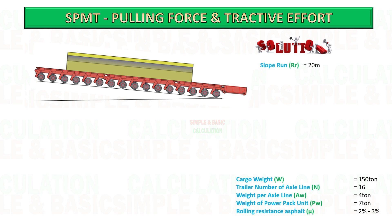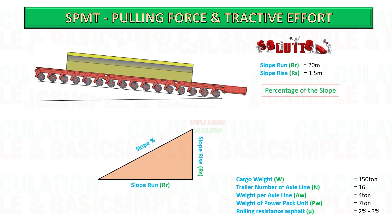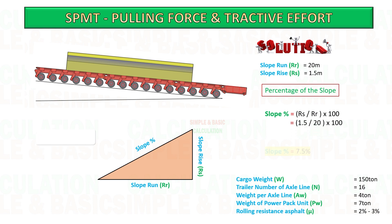In case you are transporting the cargo on an inclined road, we need to consider the road gradient, because it will increase the effort required for the drive axle. For this example we consider a 7.5% slope. See the calculation below to get the road slope.